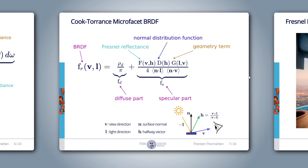Here is the equation for the complete BRDF. V is the outgoing view direction, L is the light direction pointing from the surface towards the light, N is the surface normal, and H is the halfway vector — a unit vector at the half angle between the view and light direction. The BRDF has a diffuse part and a specular part. The constant diffuse part, rho_d divided by pi, is known from the normalized Phong BRDF from episode 4. For the specular part, we use the Cook-Torrance microfacet model, which has three terms: Fresnel reflectance, the normal distribution function, and the geometry term.